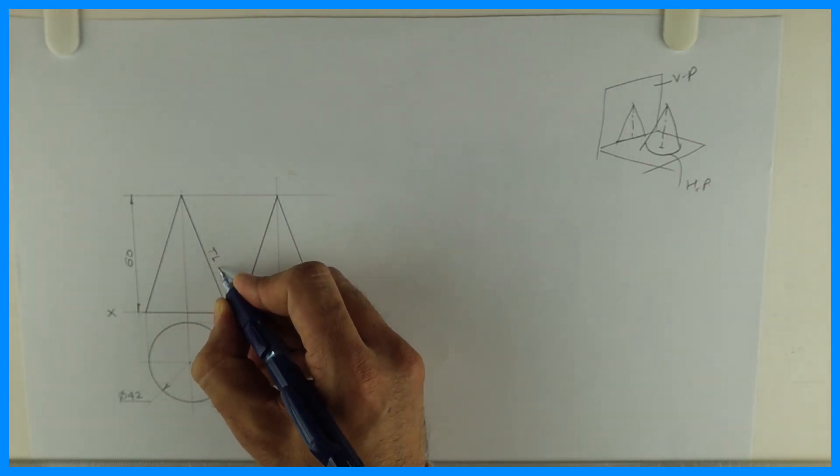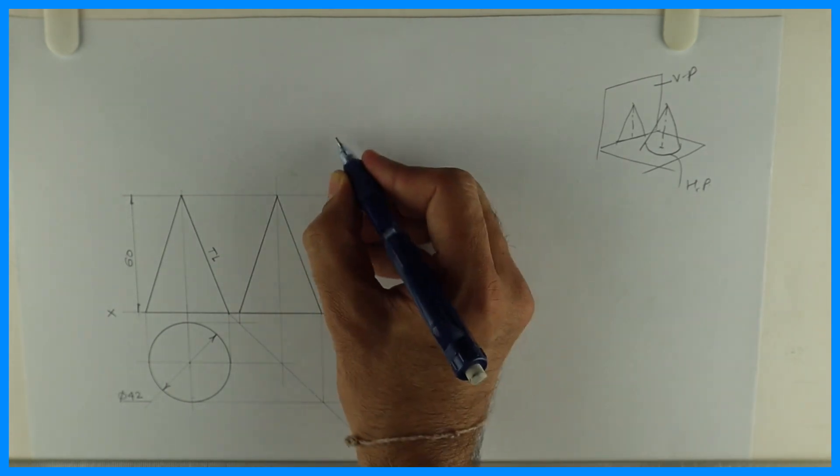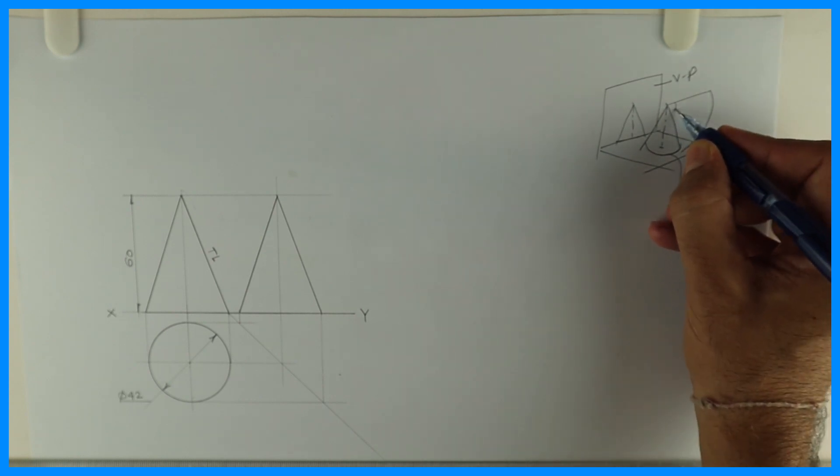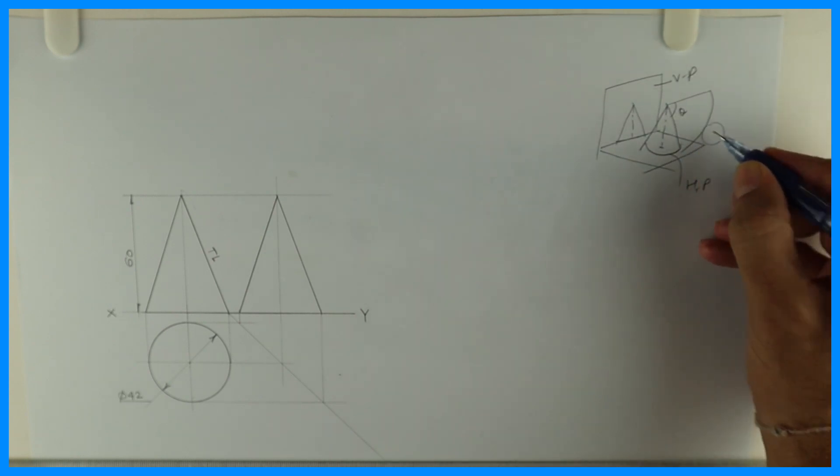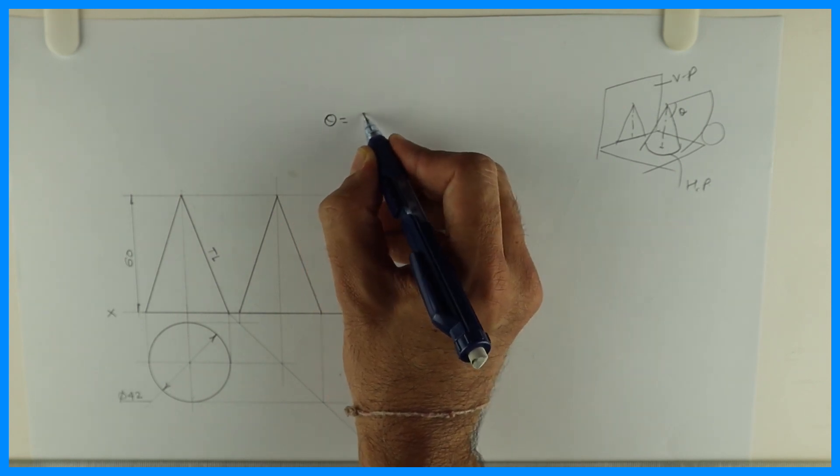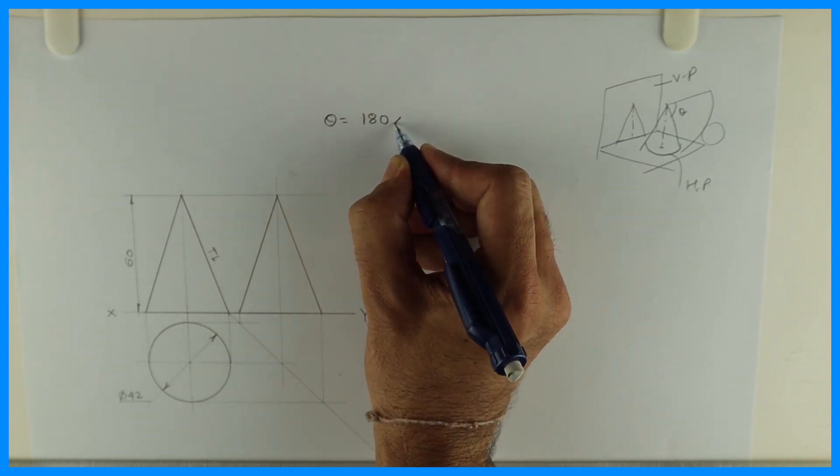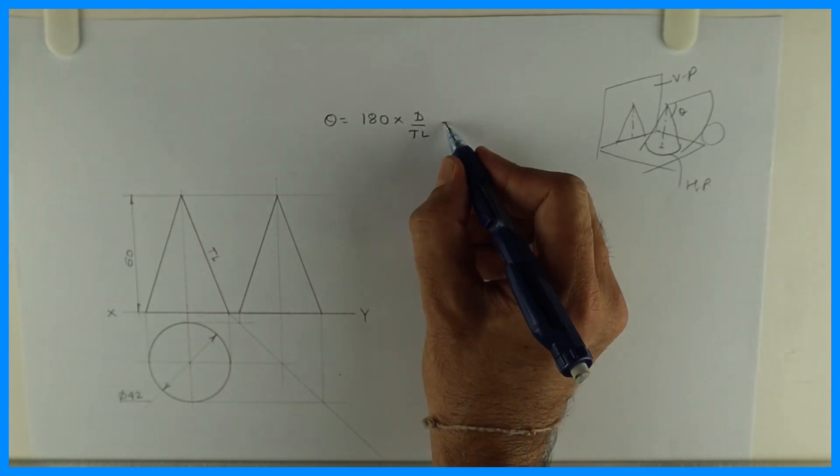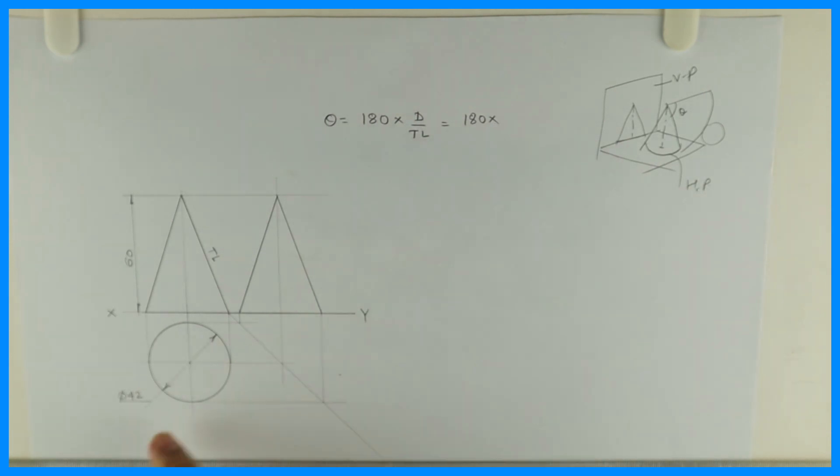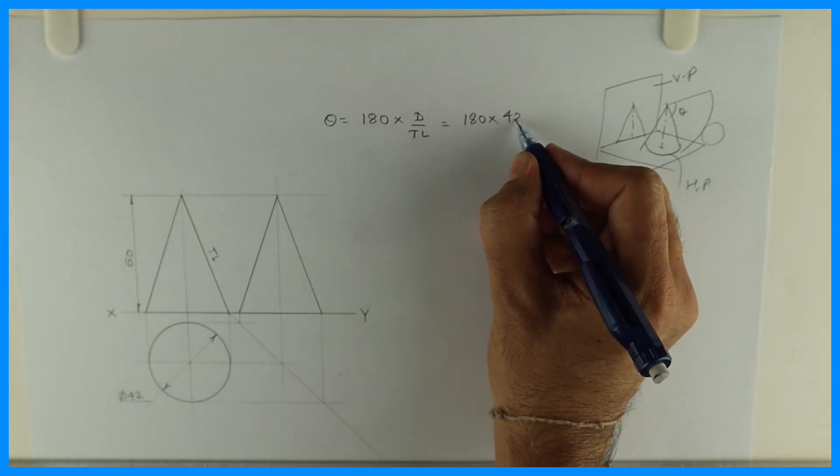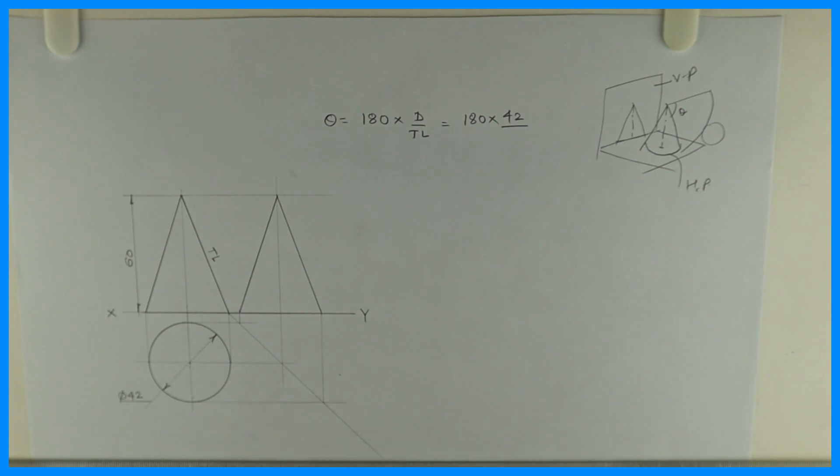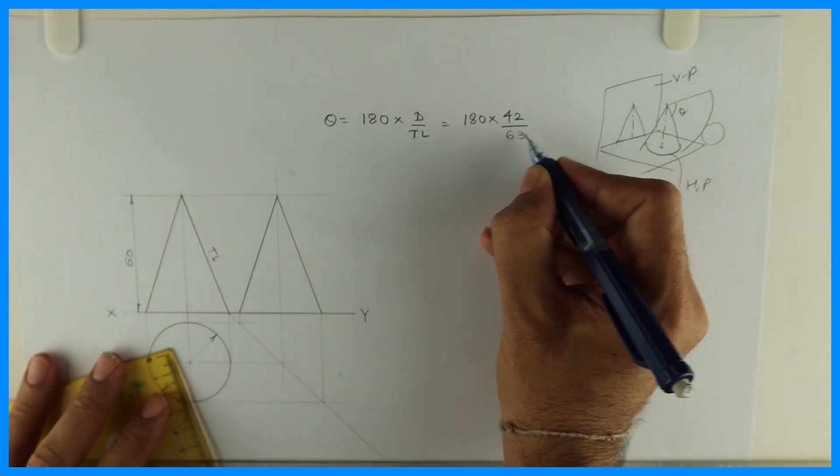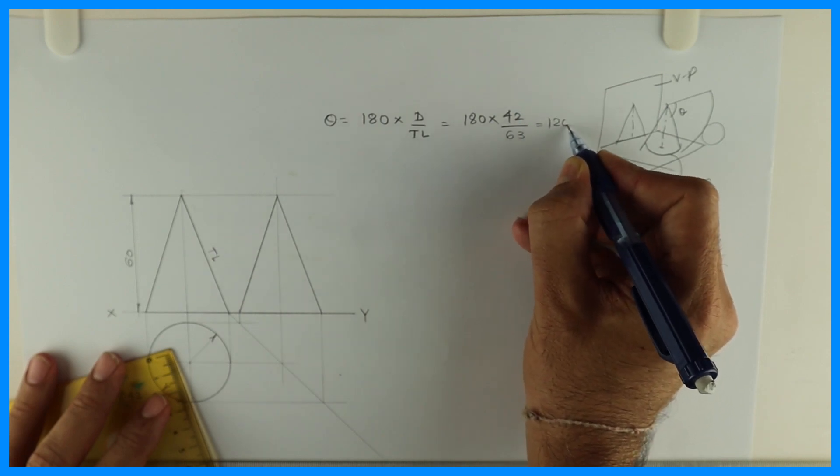Now this is true length. Now see how will you draw development. Development would be like this. This angle would be theta. So we need to find that angle theta. So that is 180 into D upon true length. We have true length. So 180 into D, diameter is how much? 42. True length, so that we need to calculate with scale. So with scale we can measure it. It would be 63, so the angle would be 120 degree.